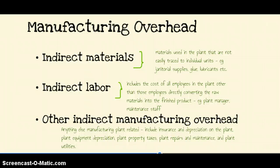The last type of manufacturing overhead is other indirect manufacturing overhead — basically anything other than indirect materials and indirect labor. This includes things like insurance, depreciation on the factory, equipment depreciation, property taxes for the factory, utilities, repairs, and maintenance. Keep the big picture in mind: these are inventoriable product costs, which means you only include factory costs in this category.